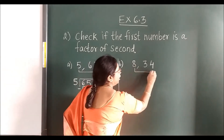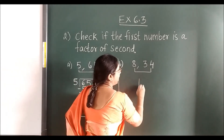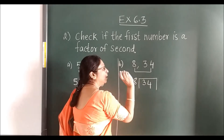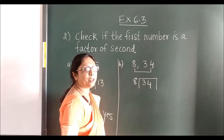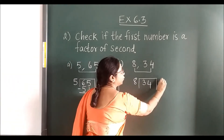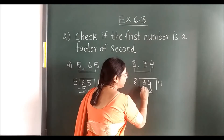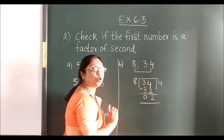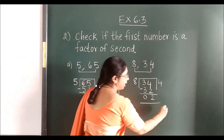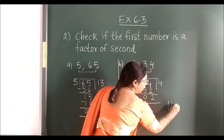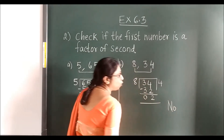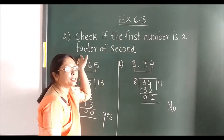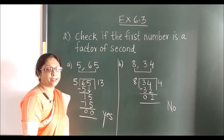Here again we divide. In simple division: 8, 3s are 24; 8 fours are 32. After subtraction you get a remainder which is not 0. Where the remainder is not 0, you write 'no' — the first number is not the factor of the second.